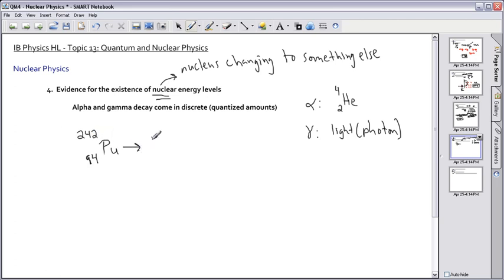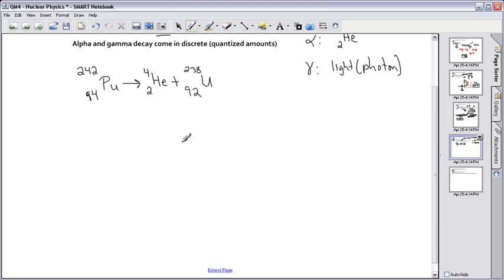Let's say it undergoes alpha decay. That means a helium-4 is kicked out and we get something else. It's a pretty easy game. 2 plus what equals 94, so it's actually going to be something that's 92, which is uranium. And 242 minus 4 is 238. So we have plutonium-242 that undergoes alpha decay to make uranium-238.